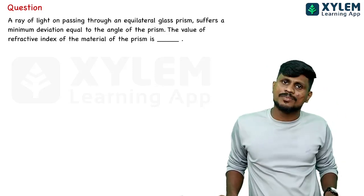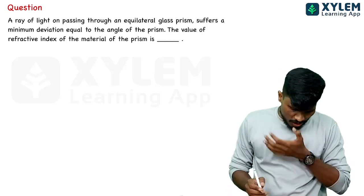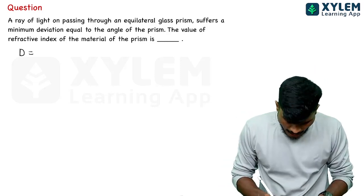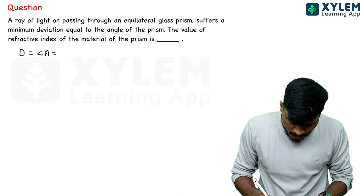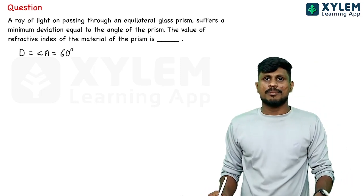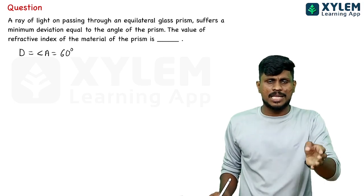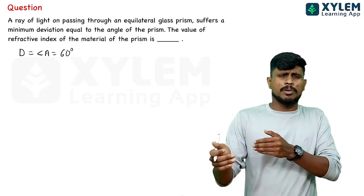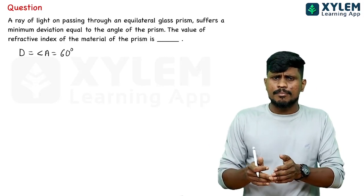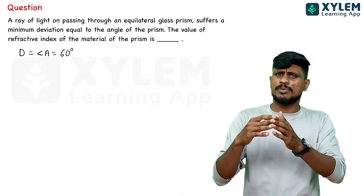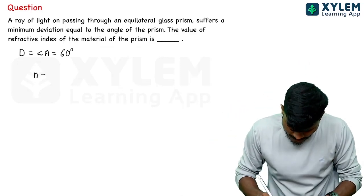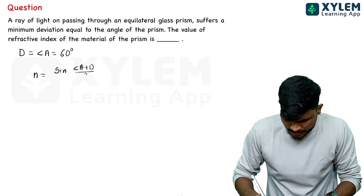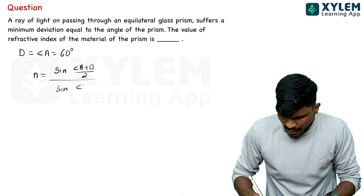The angle of deviation depends on the angle of the prism. The minimum deviation occurs when the angle through the prism is equal to a specific value. We know that n equals sin of (A plus D) by 2, divided by sin of A by 2.